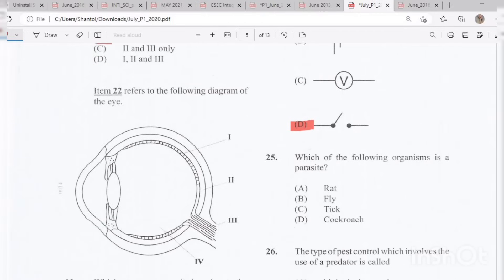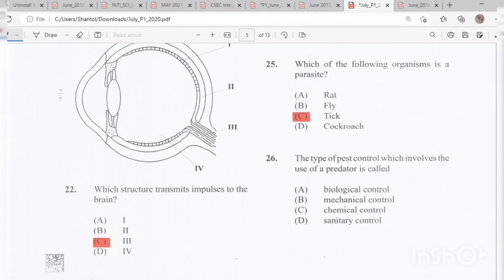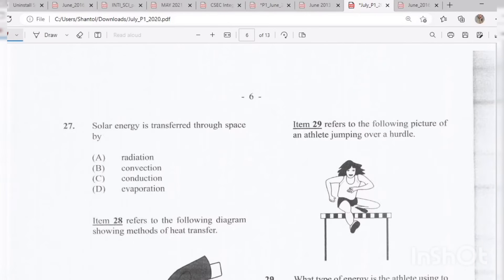Question 25: Which of the following organisms is a parasite? This is easy. The answer is C, a tick. Question 26: The type of pest control which involves the use of a predator is called A, biological control. Question 27: Solar energy is transferred through space by A, radiation.